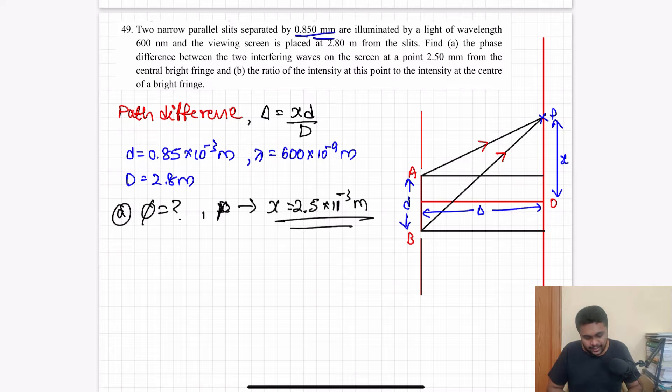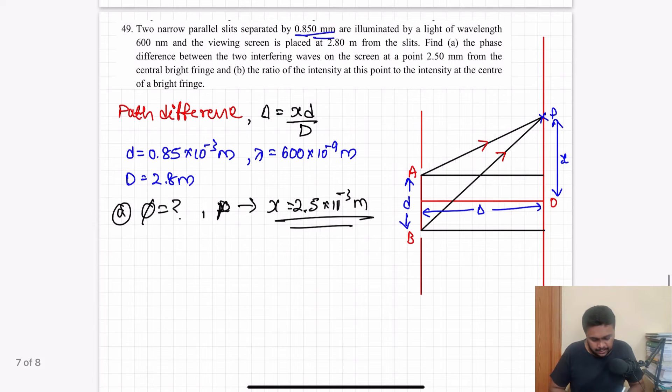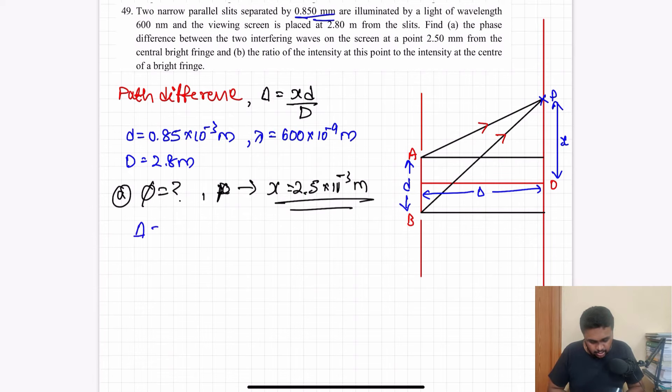First, part A, phase difference at a point P which is at the distance X equal to 2.5 millimeter, so 2.5 into 10 power minus 3 meter. To find the phase difference, first we need the path difference.